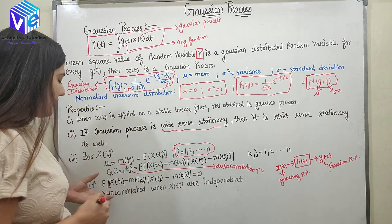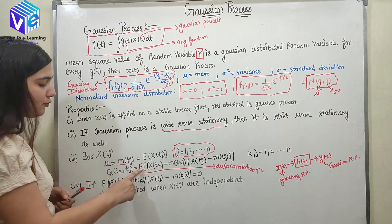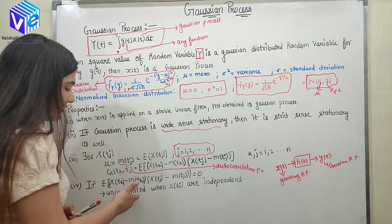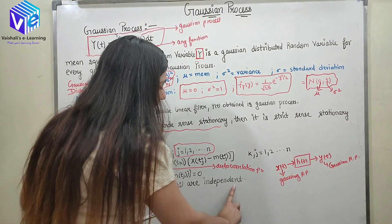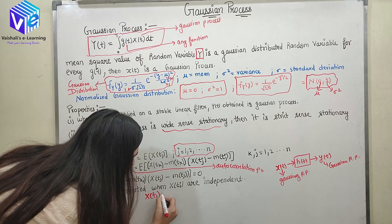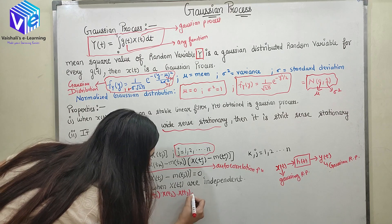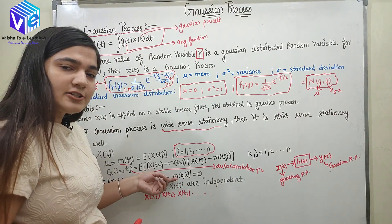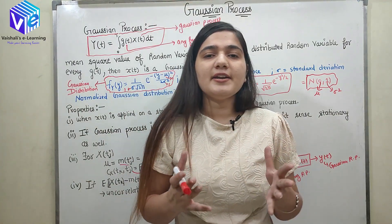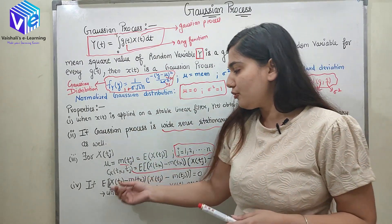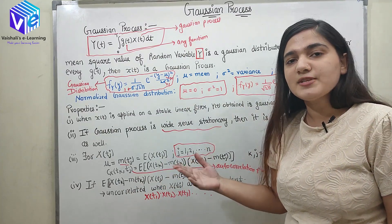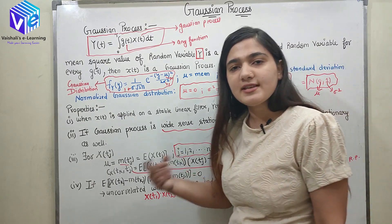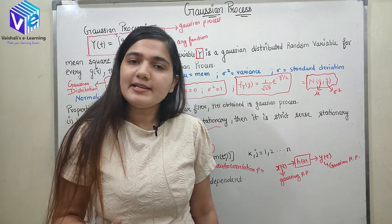The next property states: if the autocorrelation function comes out to be 0, I cannot immediately say it is uncorrelated. It is uncorrelated only with the additional condition that x(t_i) are independent — meaning I can represent x(t_i) as x(t_1) · x(t_2) · x(t_3) and so on. When I can represent x(t_i) as such a product and the autocorrelation function is also 0, then I can say these are uncorrelated. If you cannot represent it as a product, you cannot say they are uncorrelated.